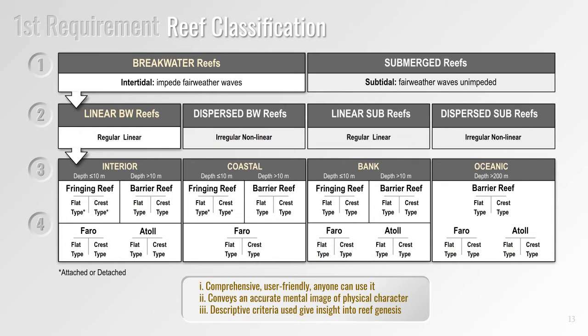The descriptive criteria should be chosen to impart significant information regarding the genesis of those categories. The classification scheme we're proposing is inclusive, covers all reef types, provides standardization of size and depth so categories can be easily distinguished, and will hopefully allow us to better understand what controls their formation. The scheme has four steps that allow us to classify any reef: the first is related to the general depth at which the reef develops, the second to the general form of the reef, the third places a reef into its maritime setting, and the fourth distinguishes between specific types of shallow geomorphology.